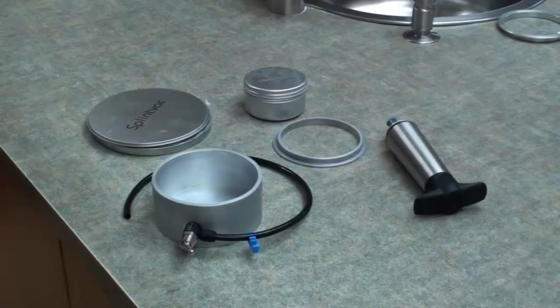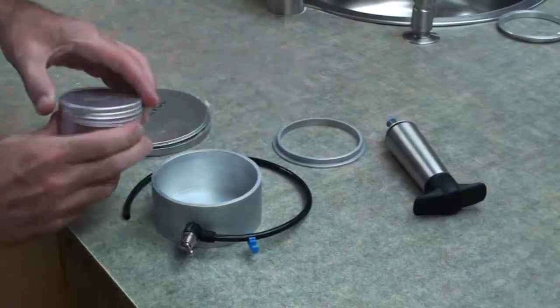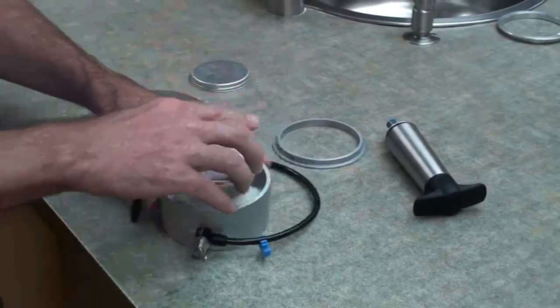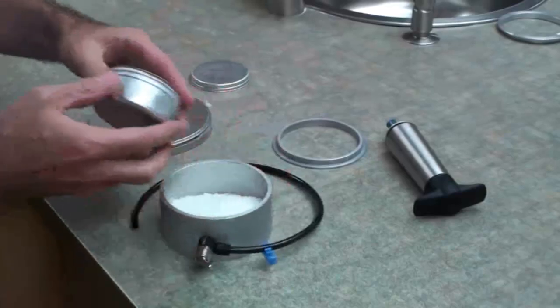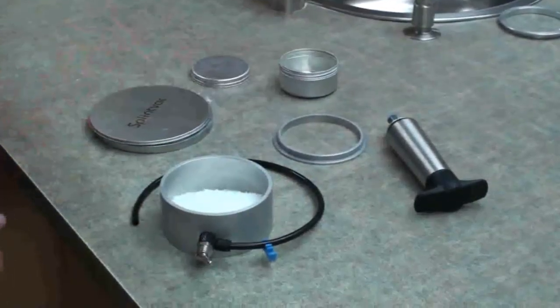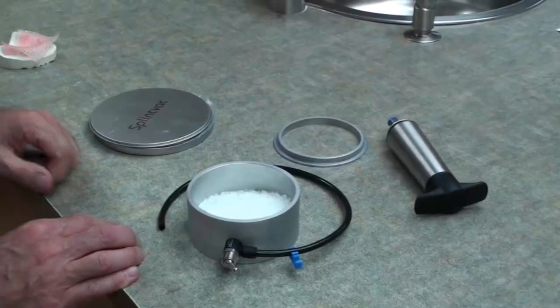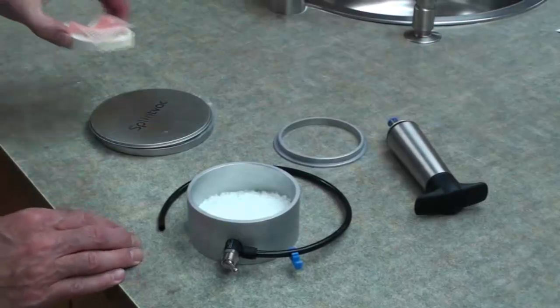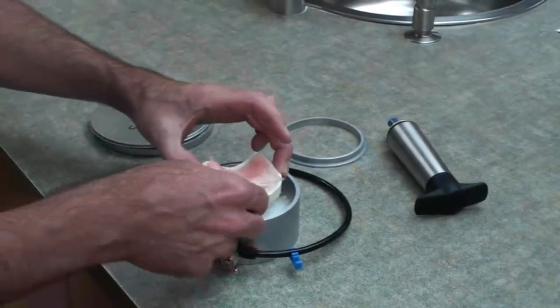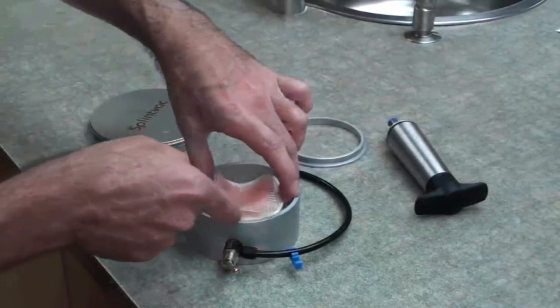From the splint vac complete kit, open the container with the acrylic beads and place them into the chamber. These beads will stabilize the model and allow you to modify its height. Place the model inside the splint vac unit, and with a reciprocating motion, lower the model to just below the top of the rim.